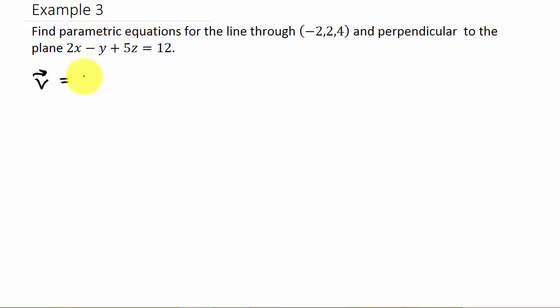Alright, so if you remember the equation of a plane, the coefficients 2, -1, 5—this is your a, b, c. a is the number in front of x, b is the number in front of y, and c is the number in front of z. So this vector ⟨2, -1, 5⟩